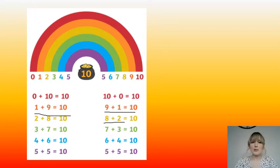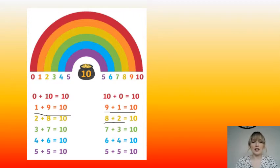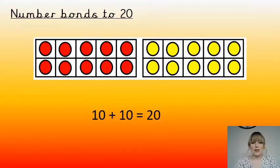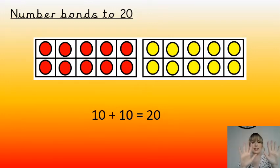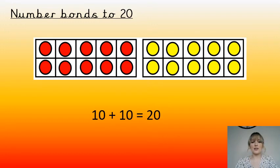So we're getting really good at our number bonds to 10 and we're starting to know them off by heart. We can use those number bonds to help us with other number facts. So we're going to have a look today at number bonds to 20. The first number bond to 20 is 10 and 10 is 20 — we've got 10 red counters and 10 yellow counters, and 10 and 10 is 20. That's the first number bond.